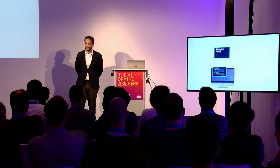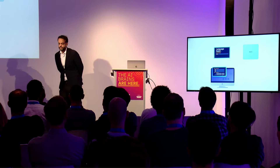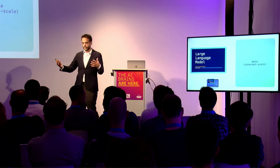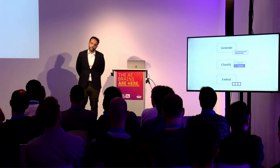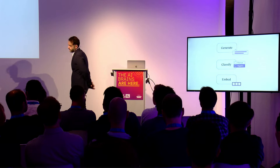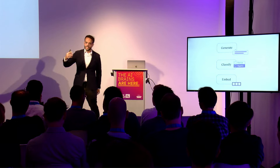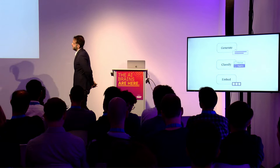A language model is a piece of software trained on a bunch of data, and after that it's able to do a lot of language processing tasks. A large language model is an even bigger language model trained on internet-scale data — hundreds of billions of words or tokens. Some ways to get value out of these language models: generation, so they can generate text; classification, so they can categorize an email or message as either type A or type B; and embedding, translating things from text into machine language.